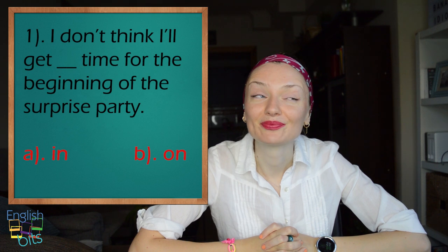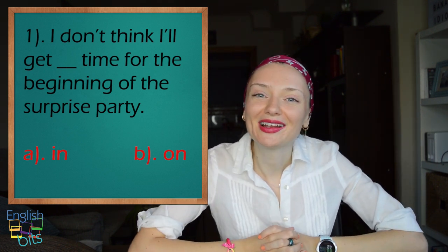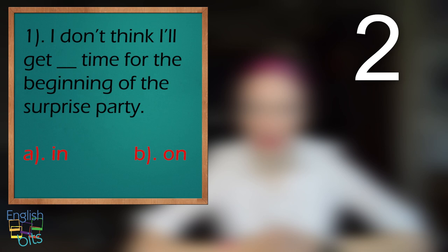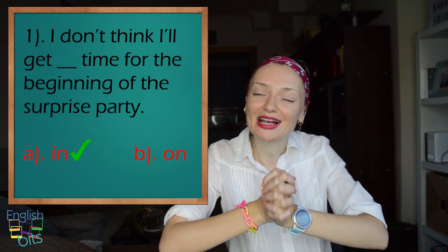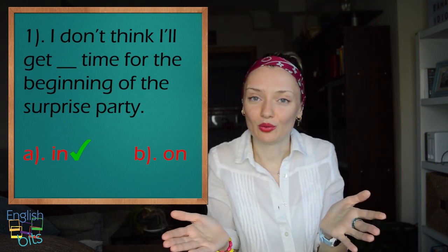To finish, we're going to do a mini-test so that you can make sure this grammar point is crystal clear. I'm going to give you six sentences and you're going to choose A or B. The first sentence: 'I don't think I'll get — A) in time, or B) on time — for the beginning of the surprise party.' The correct answer is in time: 'I don't think I'll get in time for the beginning of the surprise party,' which means a tiempo in this case.